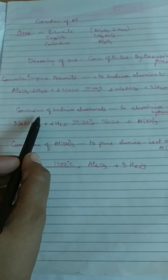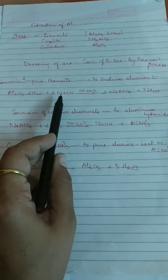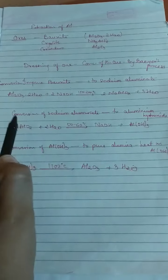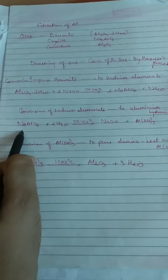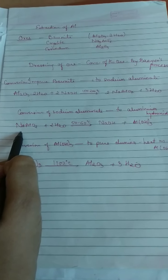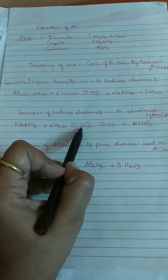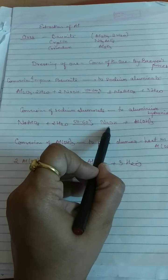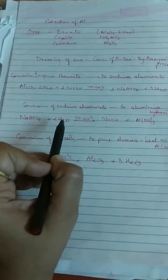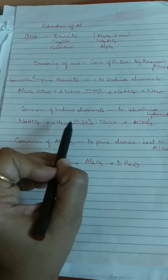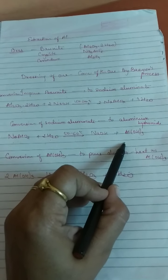The second step is conversion of sodium aluminate to aluminium hydroxide. The sodium aluminate prepared in the first reaction is hydrolyzed by adding water to it. This mixture is heated to 50 to 60 degrees Celsius, which gives us sodium hydroxide and aluminium hydroxide as products.